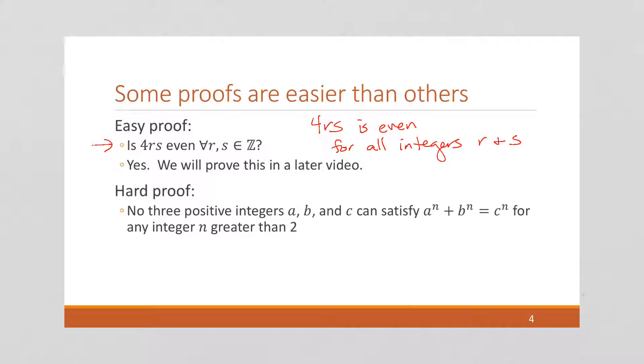Here's a harder proof. It might not look crazy hard at first but it's a to the n plus b to the n equals c to the n. And the fact that no three positive integers can satisfy it for any n greater than 2. So let me recall what it's called when n equals 2.